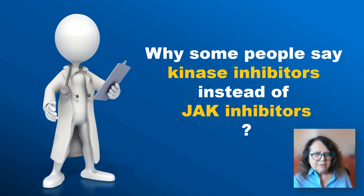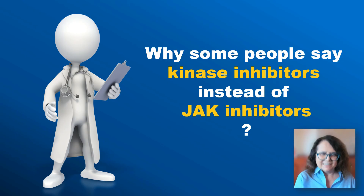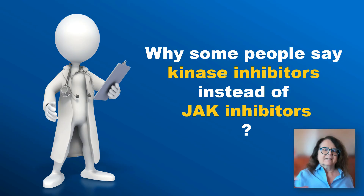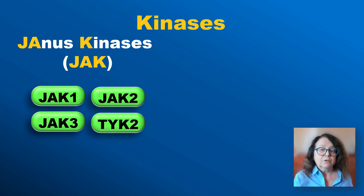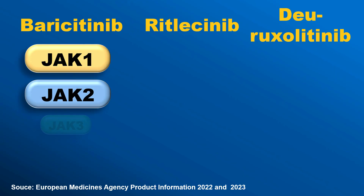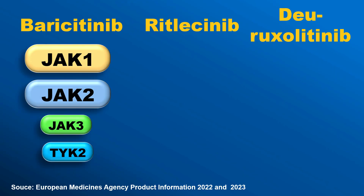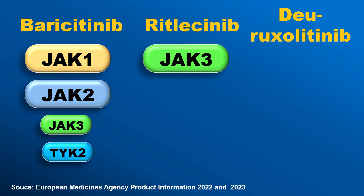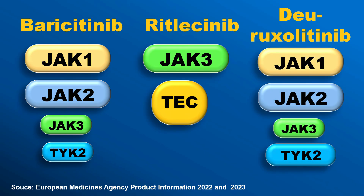Why do some people say kinase inhibitors rather than JAK inhibitors? Because JAK inhibitors may influence different kinases, not necessarily only the JAK kinases. These kinases include JAK1, JAK2, JAK3, and TYK2, but also the TEC kinases and their isoforms. Baricitinib is an inhibitor of JAK1 and JAK2, and to a lesser degree of JAK3 and TYK2. Ritlecitinib is a selective inhibitor of JAK3 and the TEC kinases. And deuruxolitinib is an inhibitor of JAK1, JAK2, and to a lesser degree of TYK2 and also JAK3.